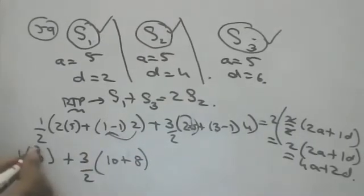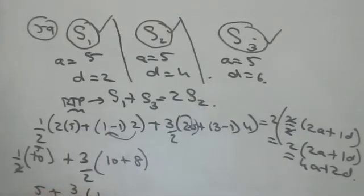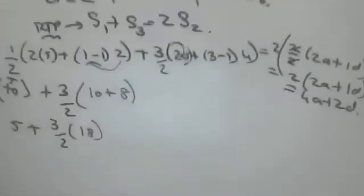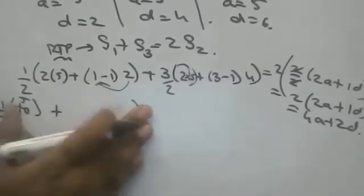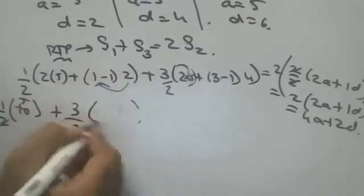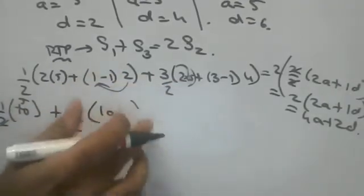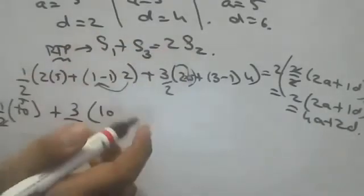So see here, this is 5 plus 3/2 into 18, 3/2 into 18. So this is 5/2, this is 3/2 into 2 times 5 is 10. Common difference is given.